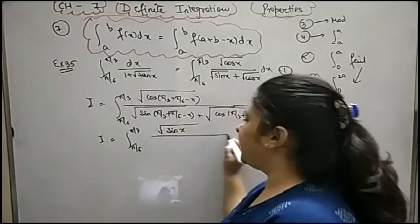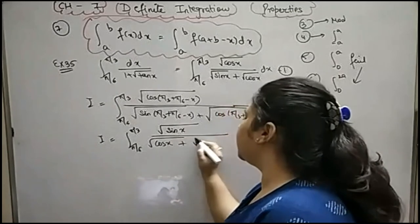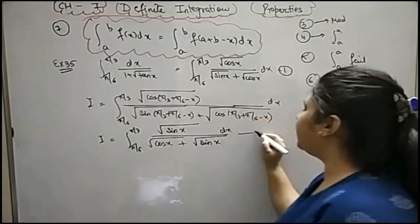Sine. Sine in the denominator. Cosine X plus this one more sine. Now tell me the same. That is what we did before.